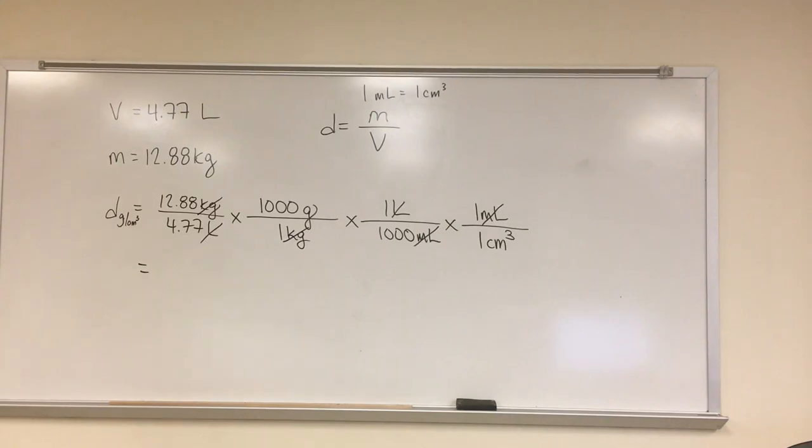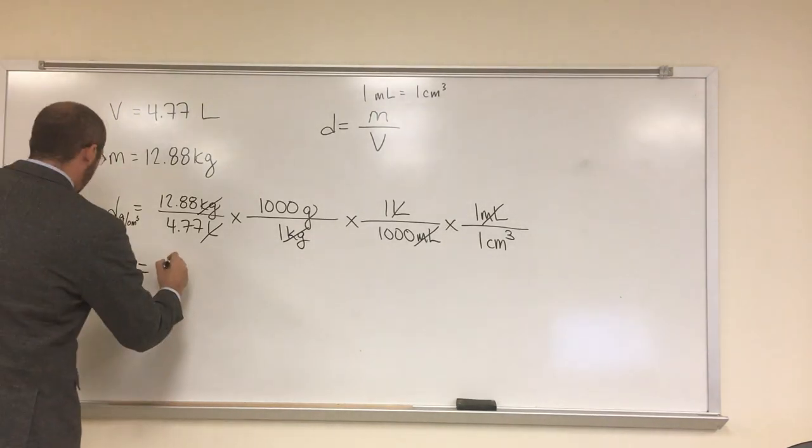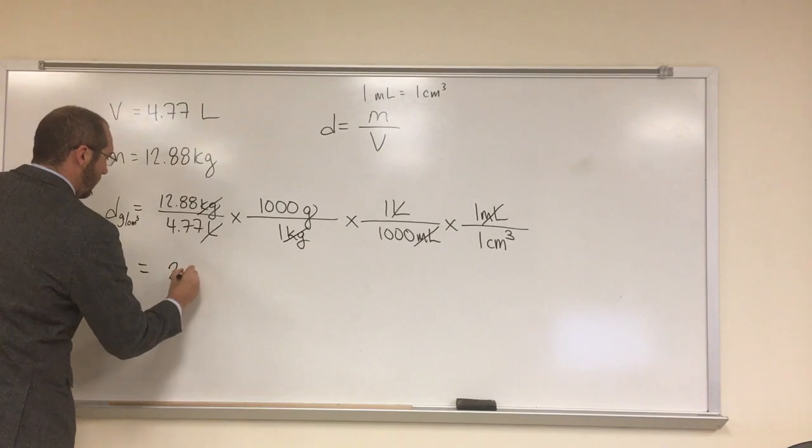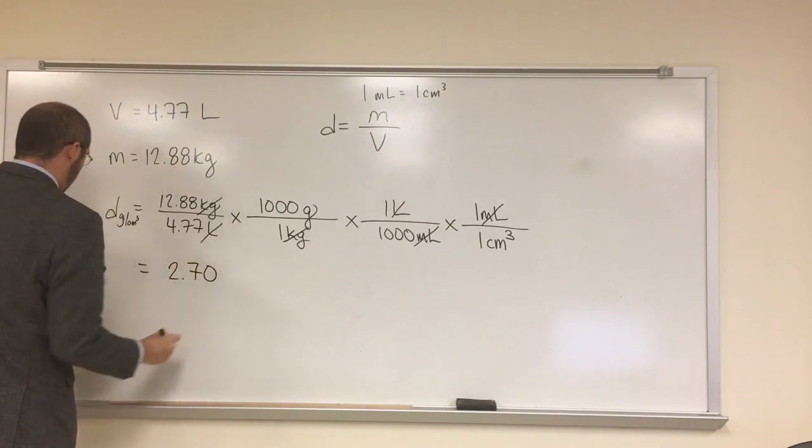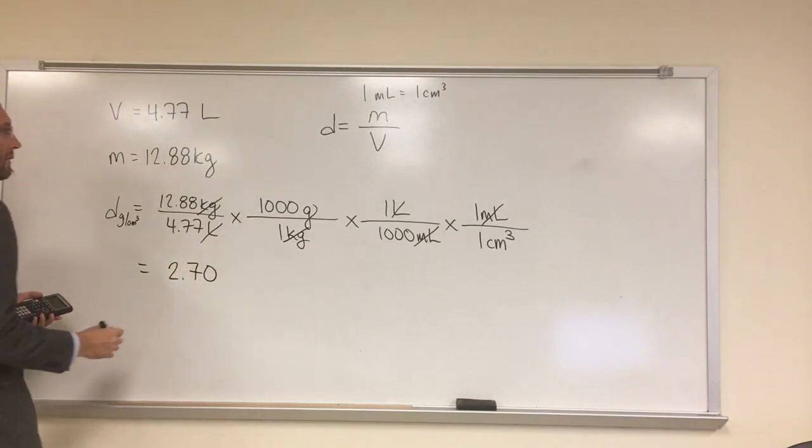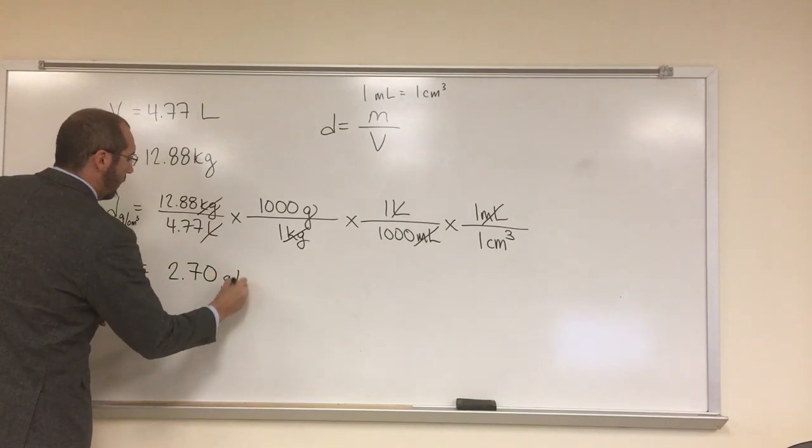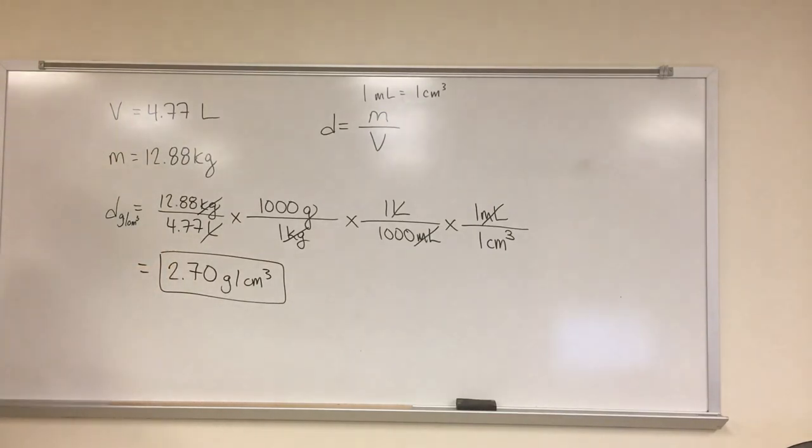And how many sig figs is our answer going to have? Three, very good, 2.70 grams per cubic centimeter. So, that's the density of the engine block. Okay? Any questions on that one? Thank you so much.